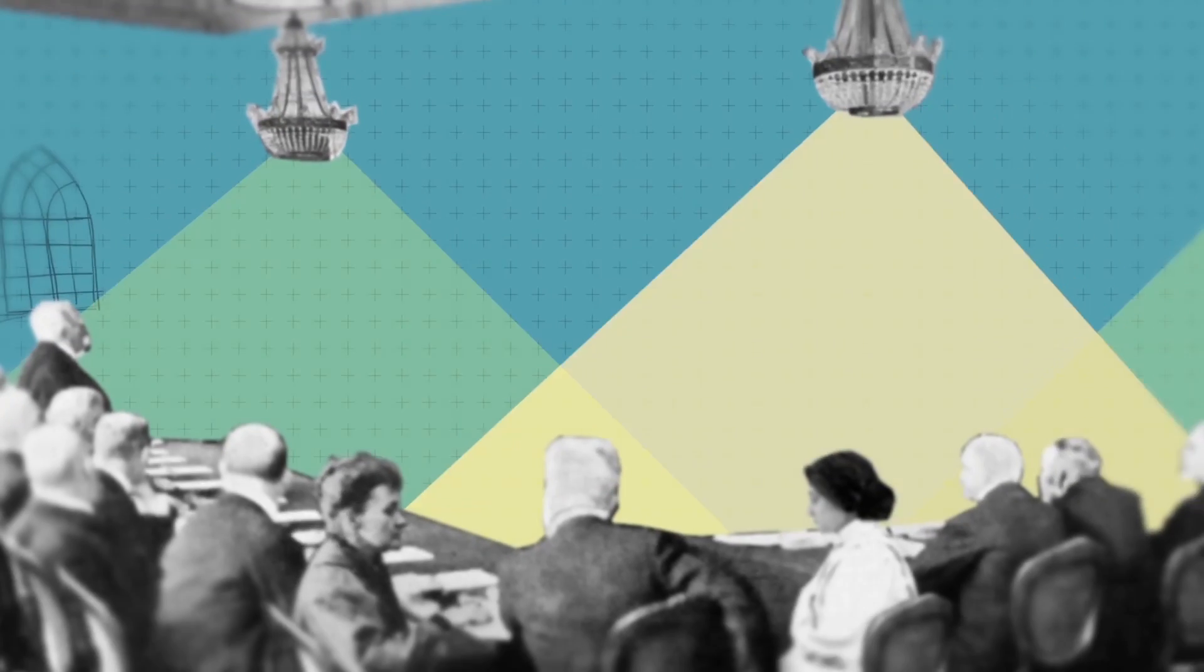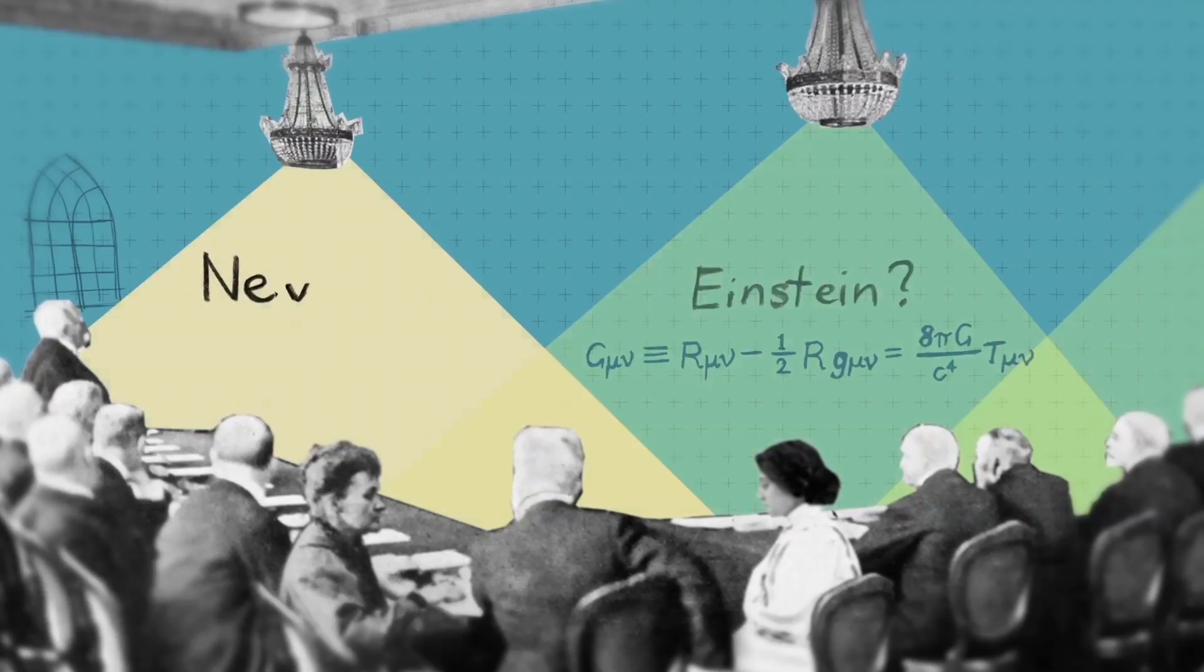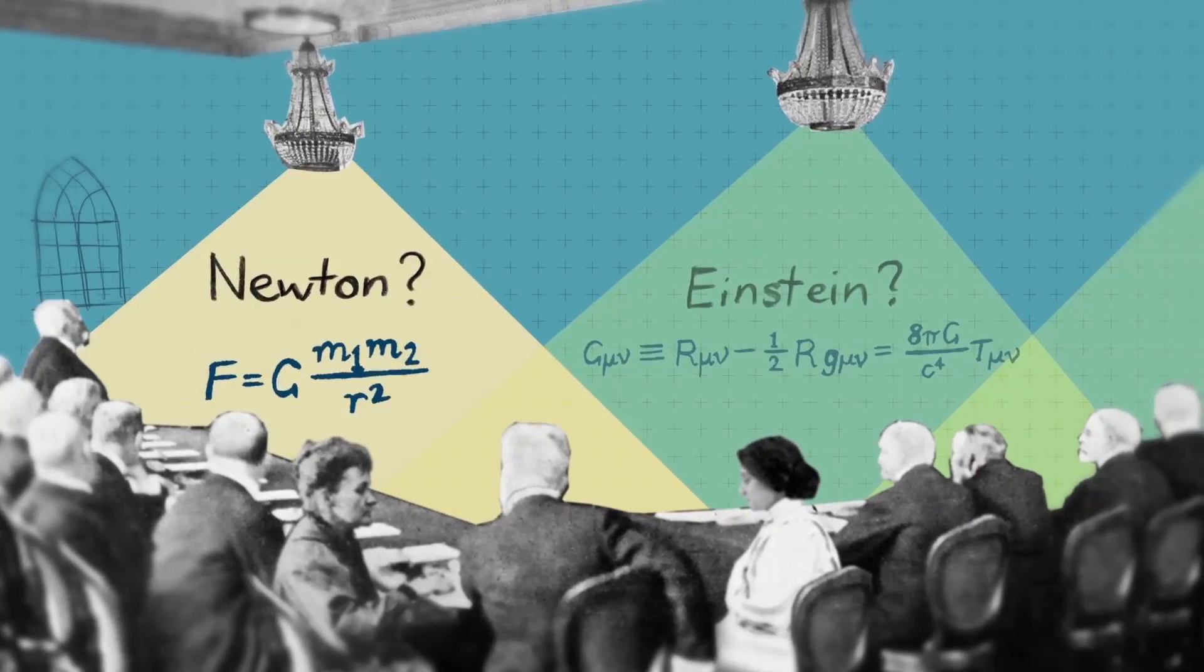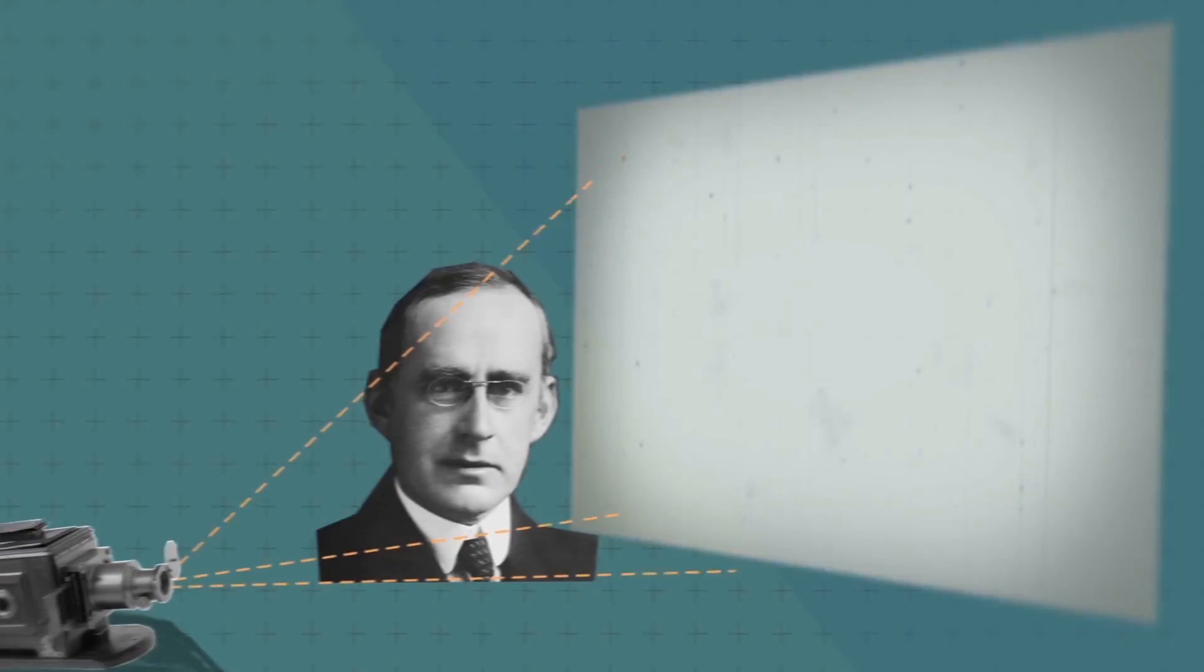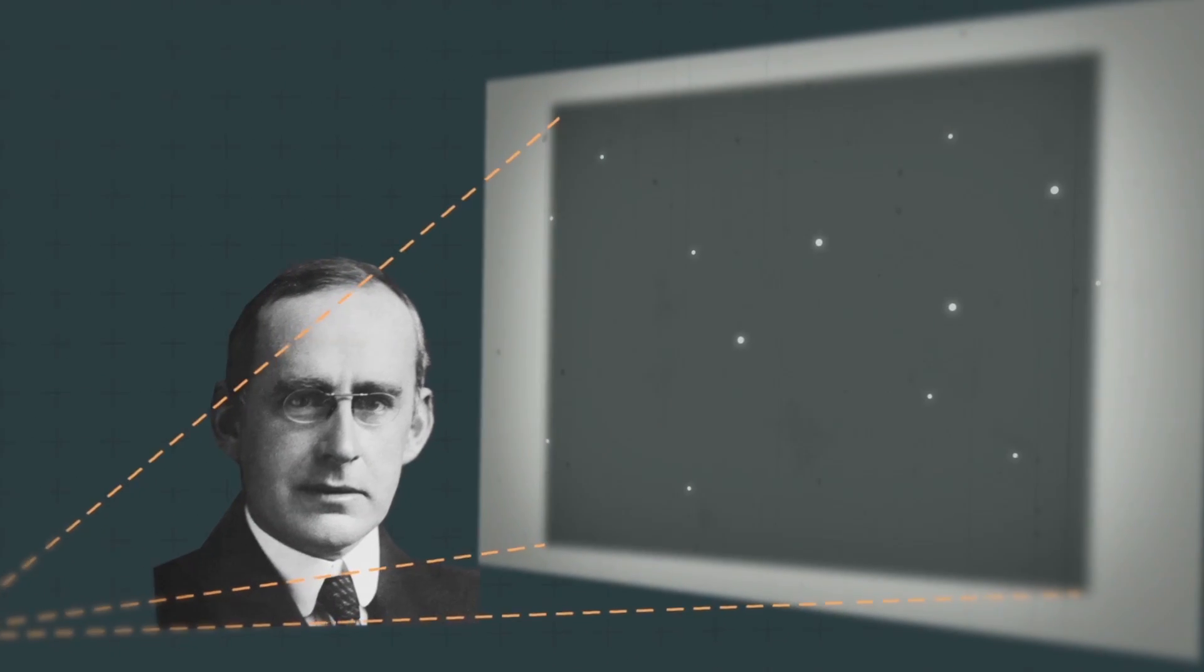Back in Britain, astronomers waited anxiously. Who would triumph? Einstein or Newton? Eddington returned to London to announce that the stars shifted just as Einstein predicted. The laws of gravity had been rewritten.